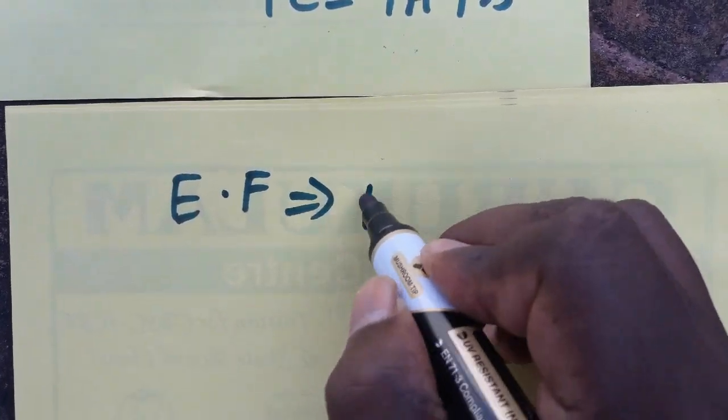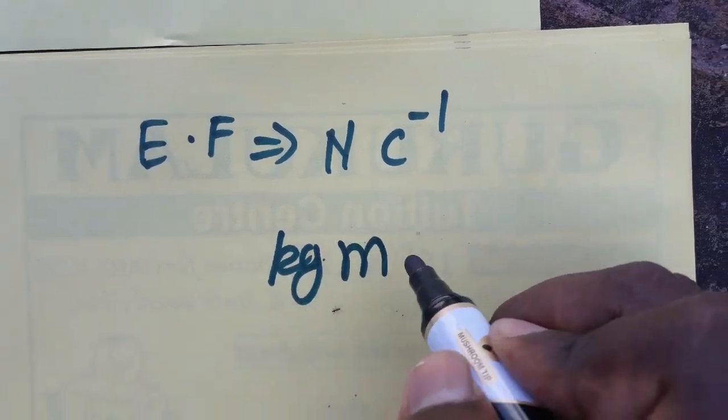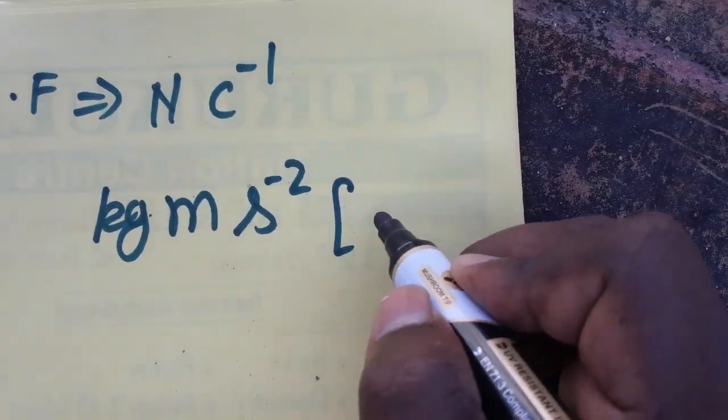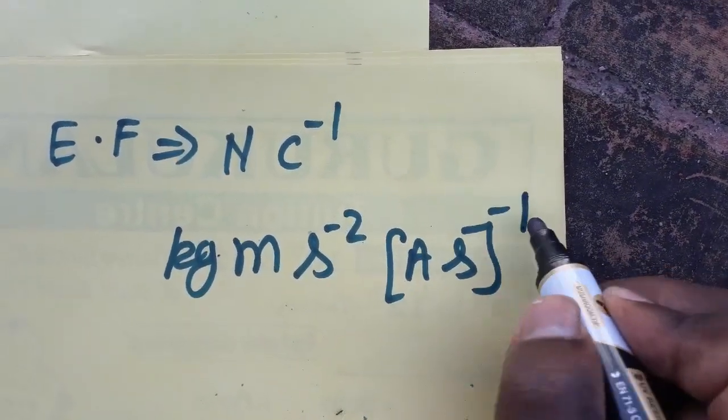So electric field SI unit will be newton coulomb inverse. Now newton is kg meter second minus 2. Coulombs, I know the coulombs SI unit will be ampere into second, but coulomb inverse is there.